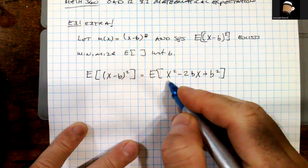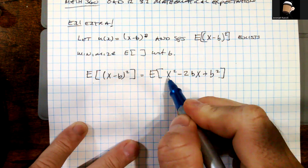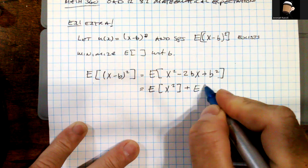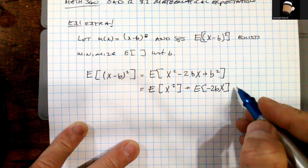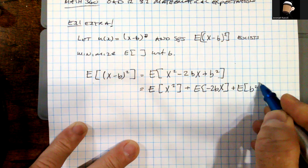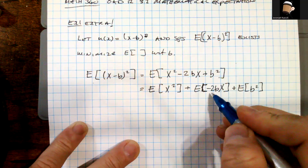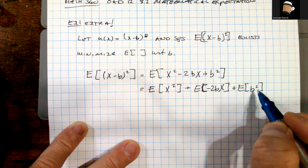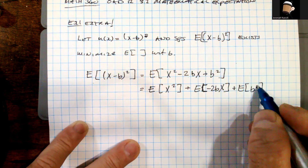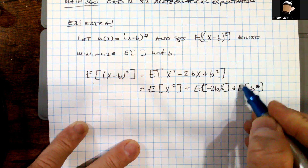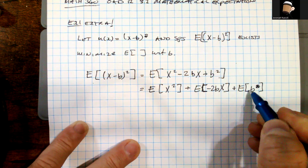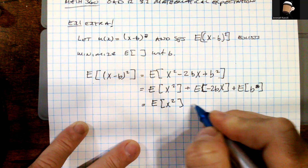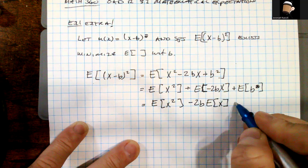Now we can use the linearity properties of the expectation operator and move across the sum and difference. We can write this as E[x²] plus E[−2bx] plus E[b²]. Again, leaning on the properties of the expectation operator — the expectation of a constant can be factored outside, and b² is constant with respect to this operator. So we get E[x²] minus 2b·E[x] plus b².